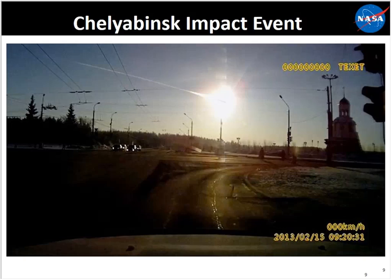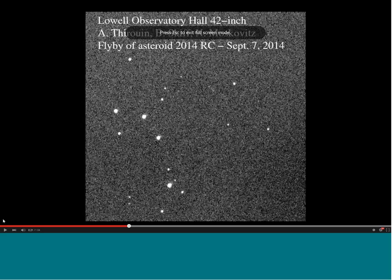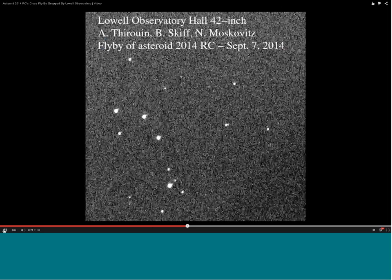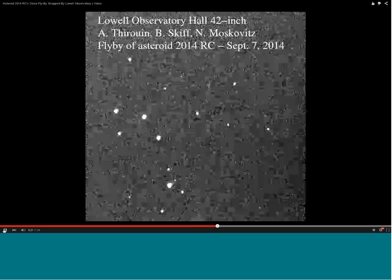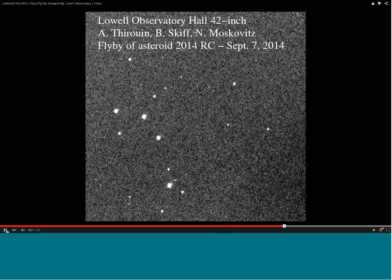Here is another event — asteroid 2014 RC. In this video, you'll see a field of stars in the background and an object moving from the upper left down toward the lower right — that's an asteroid. Asteroids just reflect light from the sun, similar to the moon. They don't give off their own light. The speed of that motion, taken over several minutes of images from the telescope, tells you it's a near-Earth asteroid.